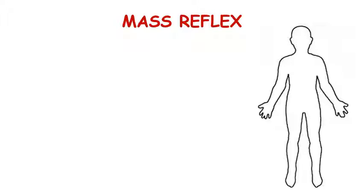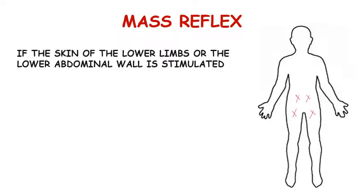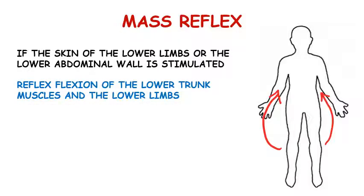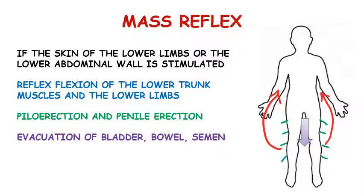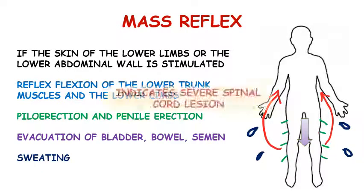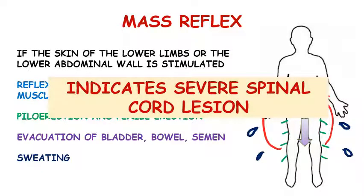Regarding mass reflex, it is a pathological reflex where on stroking or scratching the skin of the lower abdominal wall or the lower limbs, there is reflex flexion of the lower limbs and lower abdominal muscles, piloerection and penile erection, involuntary discharge of bladder, bowel and semen, and sweating. It is a reflex of spinal automatism associated with severe spinal cord damage like complete transection of the spinal cord.